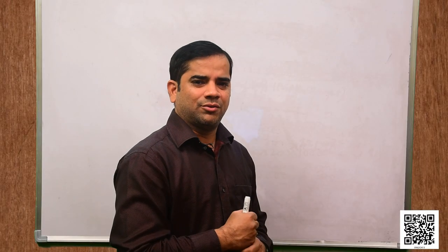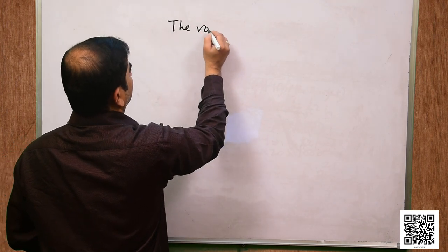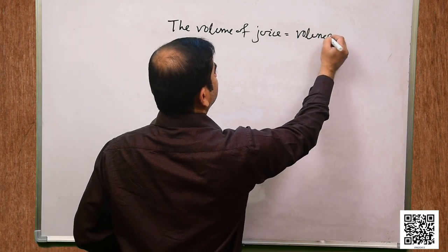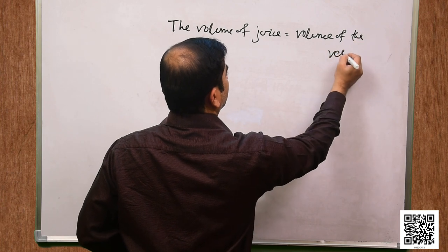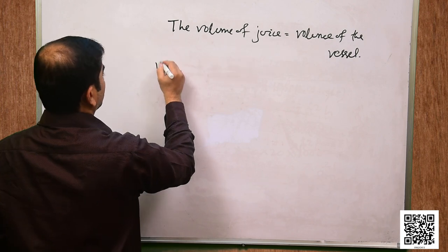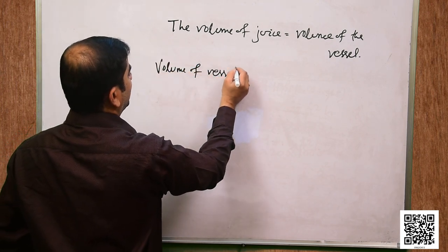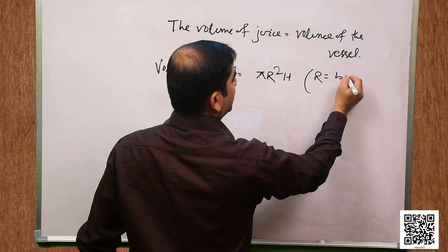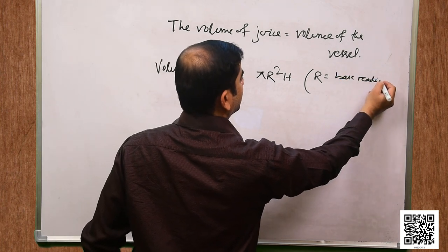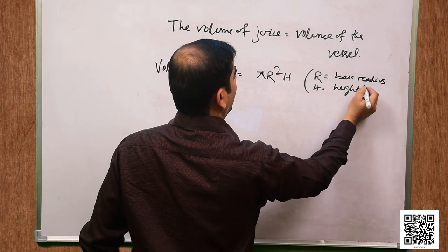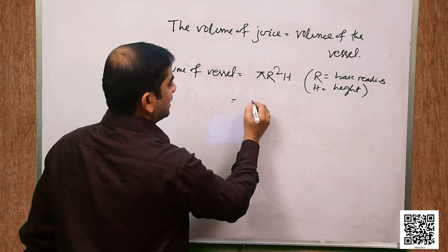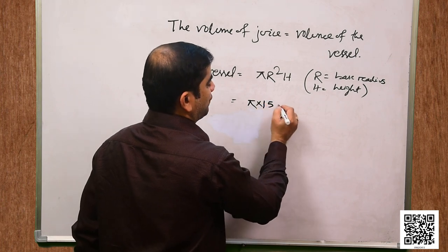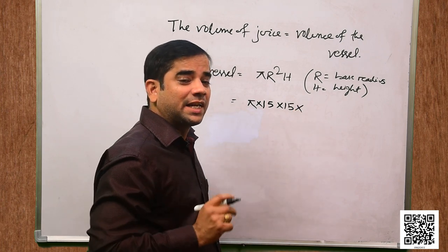Let us now discuss the solution. The volume of juice is equal to volume of the vessel. Volume of vessel is equal to pi r² h, where r is the base radius and h is height. So, pi into 15 into 15 into height 32 cm — that is the volume in centimeter cube.